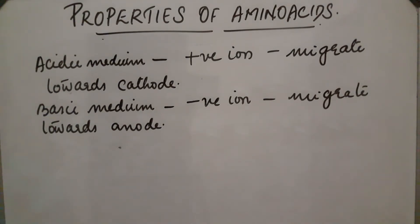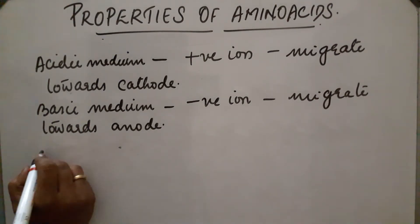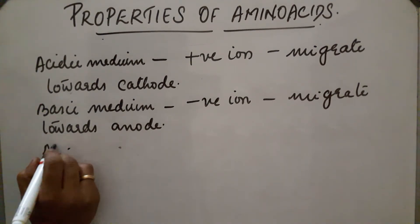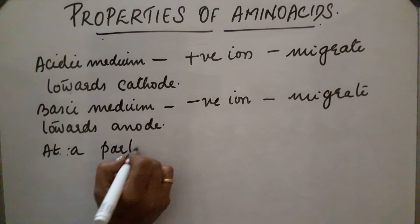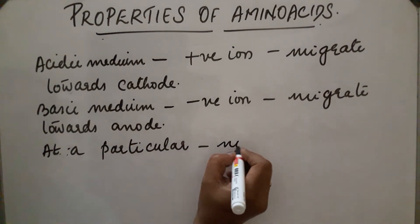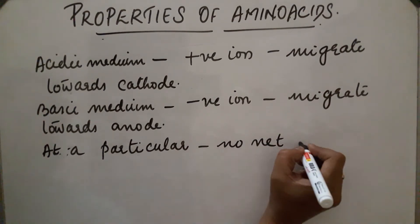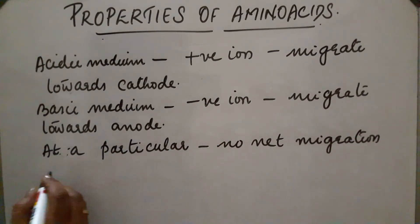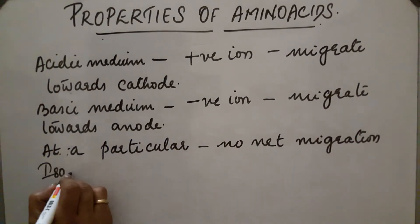At a particular pH, there will be no migration under the influence of an electric field, and this point is known as the isoelectric point. At this particular pH, there is no net migration under the influence of the electric field. This pH is known as the isoelectric point.